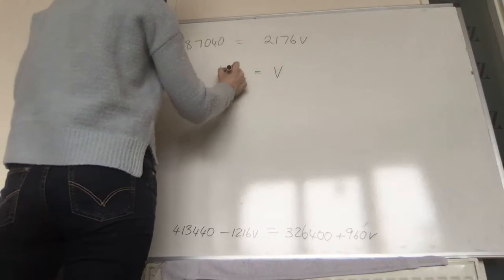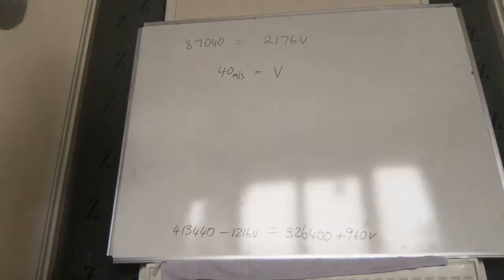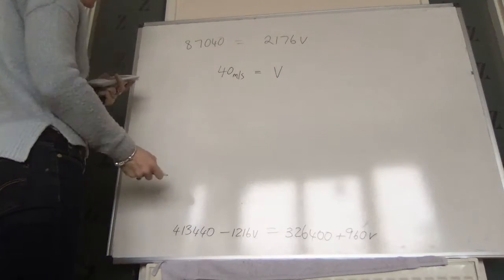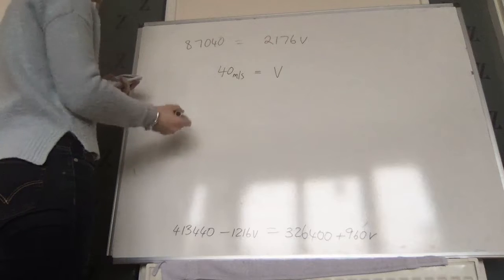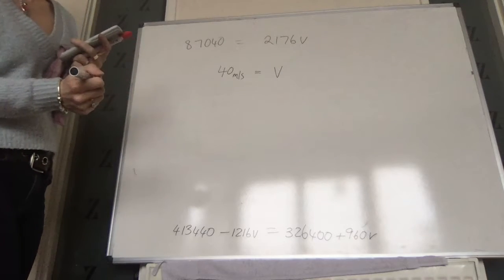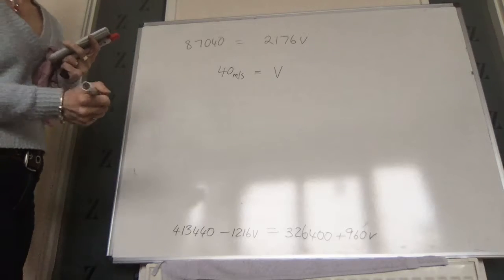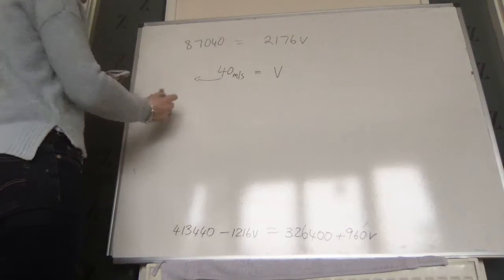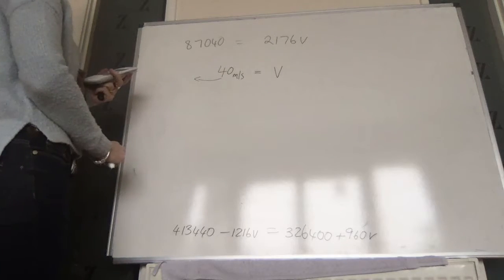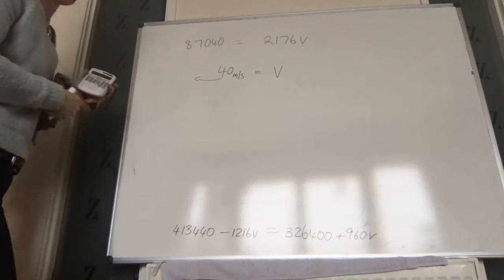V is 40 metres per second. Now that we know V, go back to either of the original equations and substitute V equals 40 to find the actual frequency F. That should be straightforward.